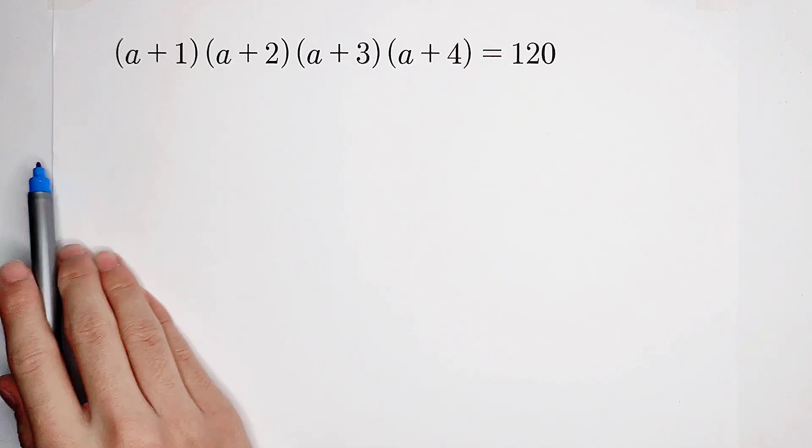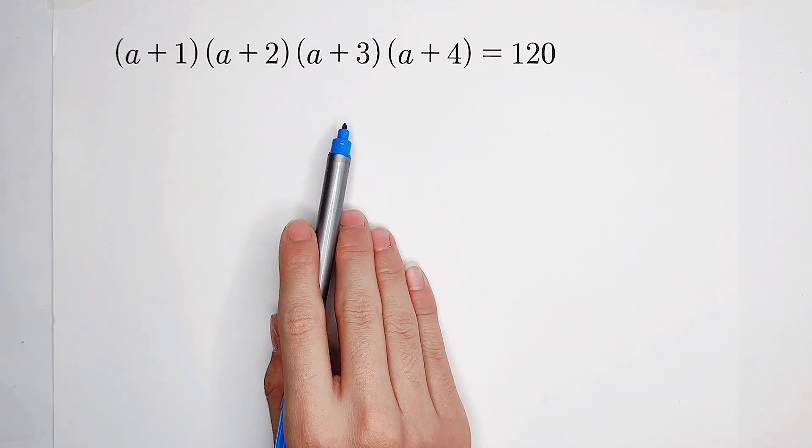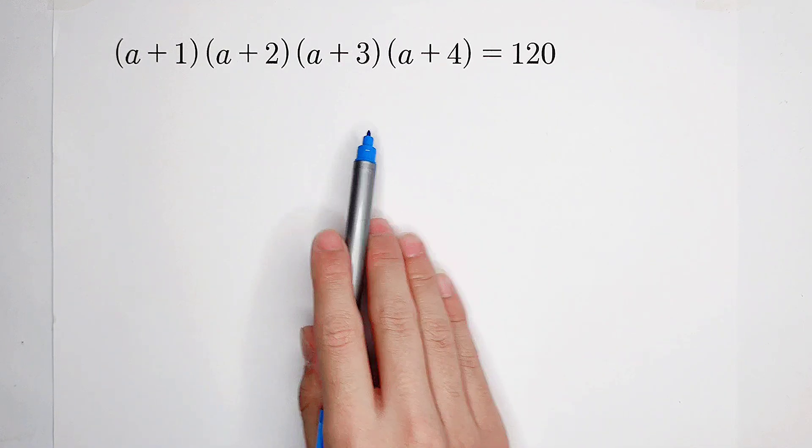Welcome back to Mathwino! Solve this equation about a: a plus 1 times a plus 2 times a plus 3 times a plus 4 equals 120.